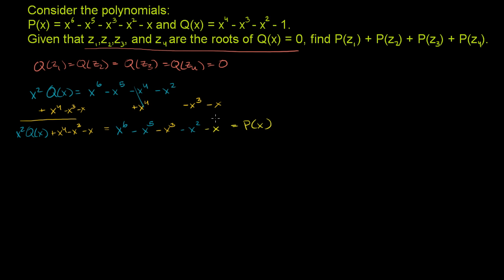We could stop there, but the remaining part — x to the fourth minus x to the third — looks tantalizingly close to Q(x) as well. In fact, it is Q(x) with certain terms removed. Starting from Q(x) and adding x squared and 1, the x squared and the constant cancel out and we're left with just x to the fourth minus x to the third. So we can substitute that green part with Q(x) plus x squared plus 1.